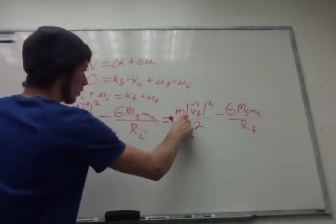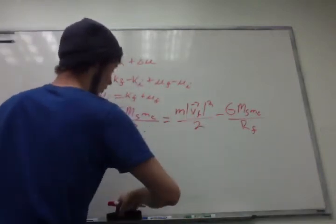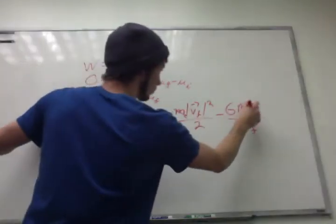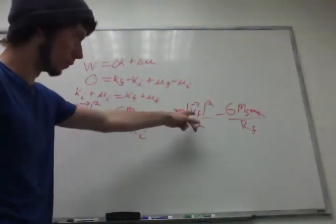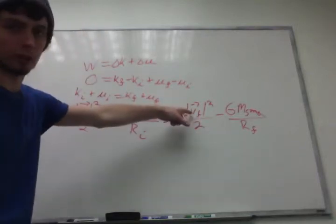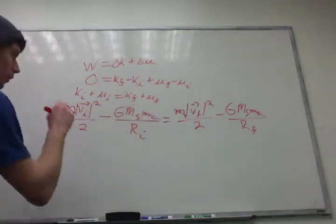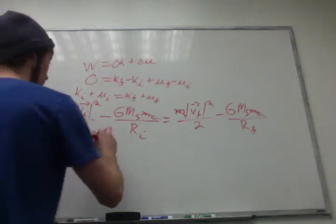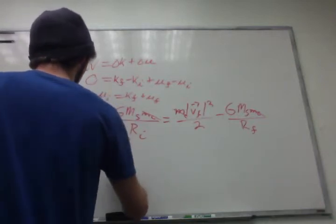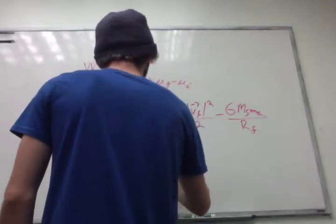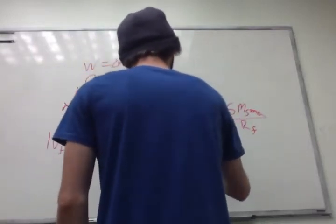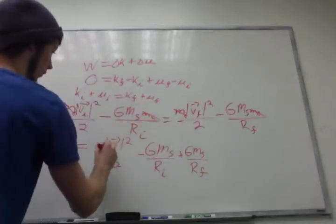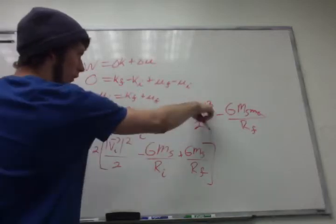And because we're solving for final velocity, I'm going to bring this value over and algebraically solve for the final velocity before we plug in numbers. So we know that the final velocity is going to equal, so this is from bringing that over, we still have to multiply by 2, and we have to take the square root.